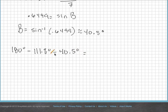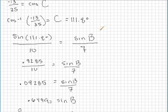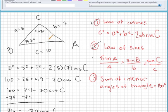which we determined was approximately 40.5 degrees. And that should give me angle A. So 180 minus 111.8 minus 40.5 is equal to approximately 27.7. Actually, that's exactly equal to 27.7. So that is what angle A is equal to.